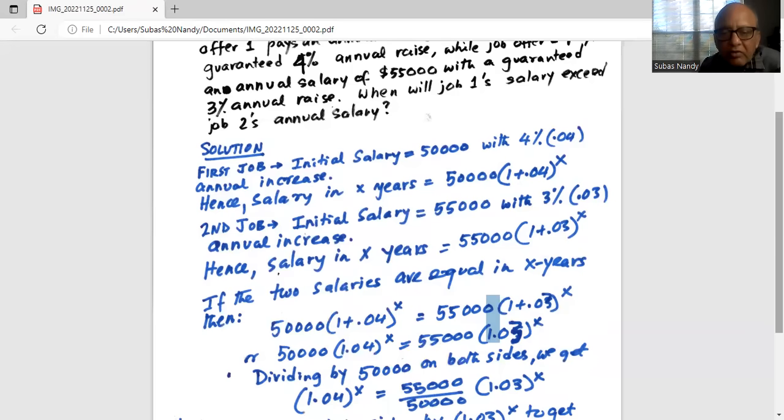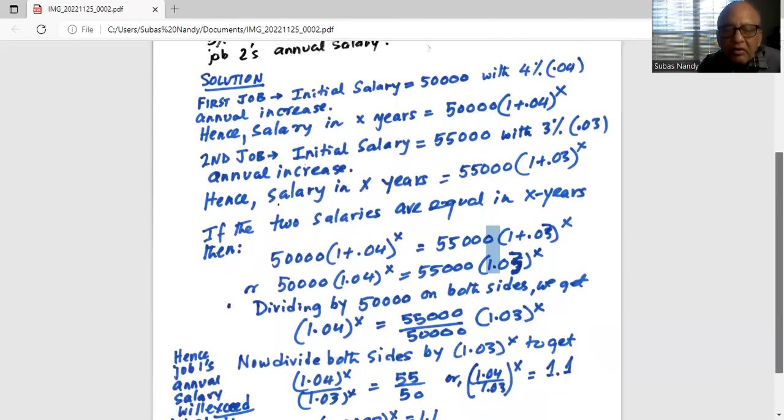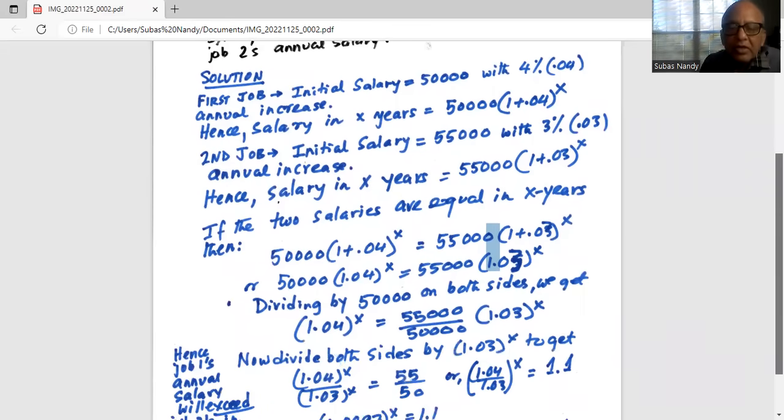So dividing by 50,000 on both sides we get 1.04^X on the left hand side equal to 55,000 divided by 50,000 times 1.03^X. Now we divide both sides by 1.03^X to get 1.04^X divided by 1.03^X is equal to 55 divided by 50.